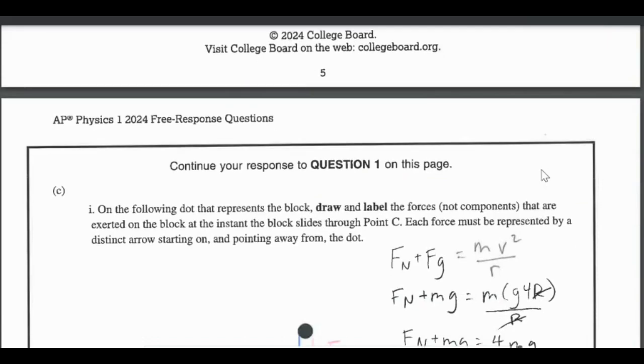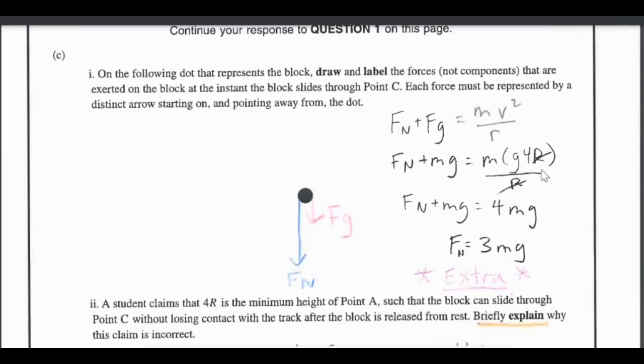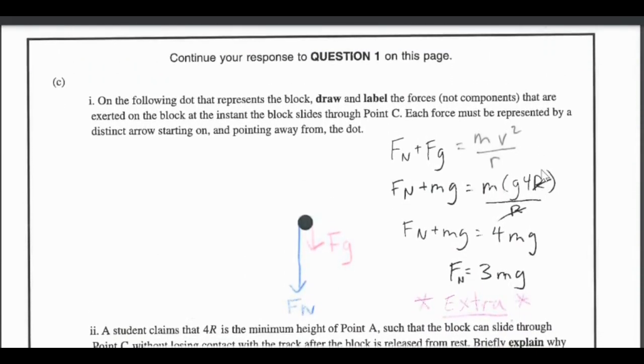Going to the last portion of this, it says on the following dot that represents the block, draw and label the forces that are exerted on the block at the instant the block slides through point C. Point C is basically the top of a loop so it's kind of like the top of a roller coaster. Each force must be represented by a distinct arrow starting on and pointing away from the dot.